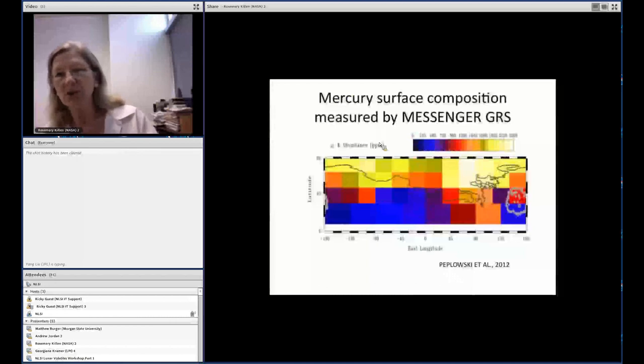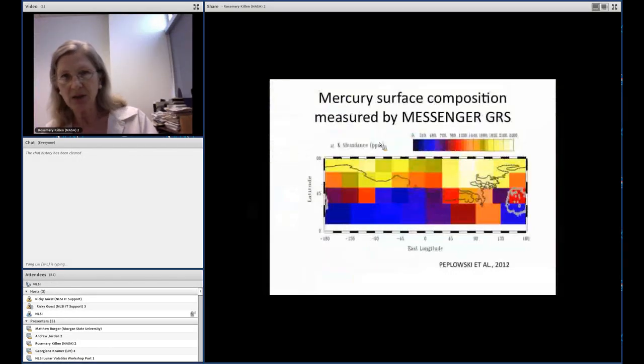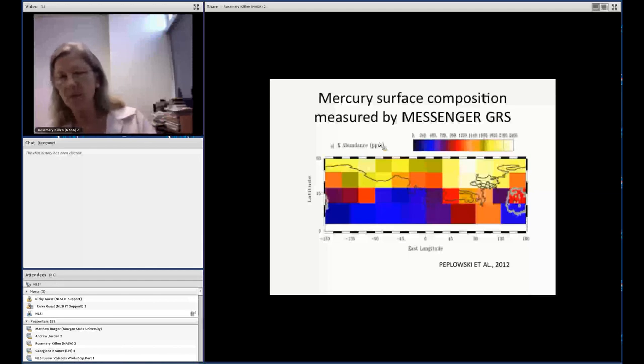This is the gamma-ray spectrometer observations of potassium. It was shown at LPSC and they have a paper, I believe it's in press in JGR. They have similar abundance maps for sodium, although the relative abundance in the north to the equator is slightly smaller for sodium. You can see that the potassium abundance in some regions in the north is enhanced by a factor of 10 over that in the equatorial region. Paplowski speculated that the potassium is evaporated from the equatorial regions and cold-trapped at the north.